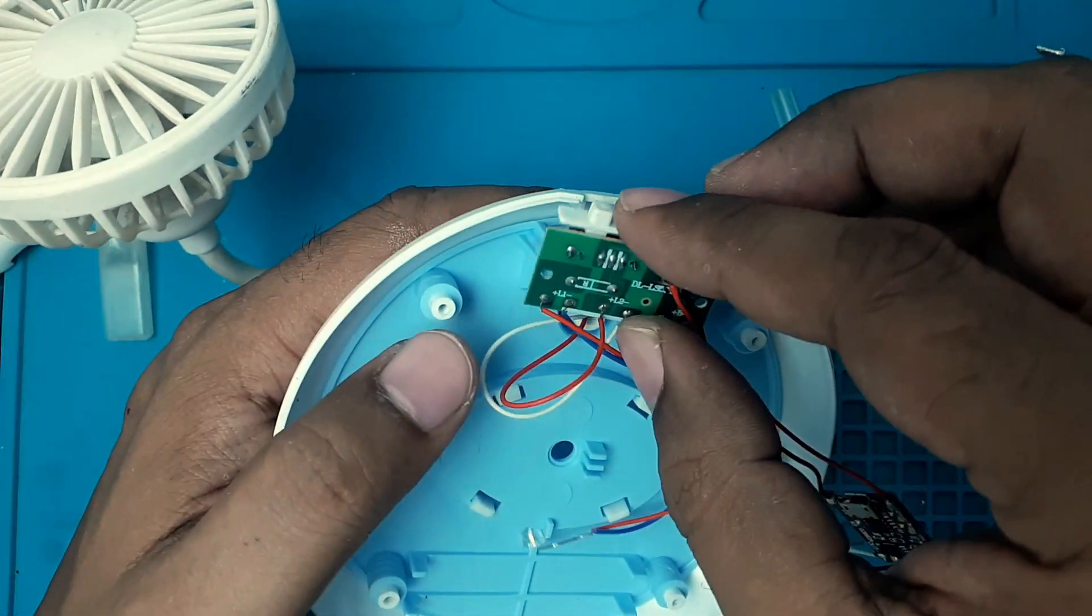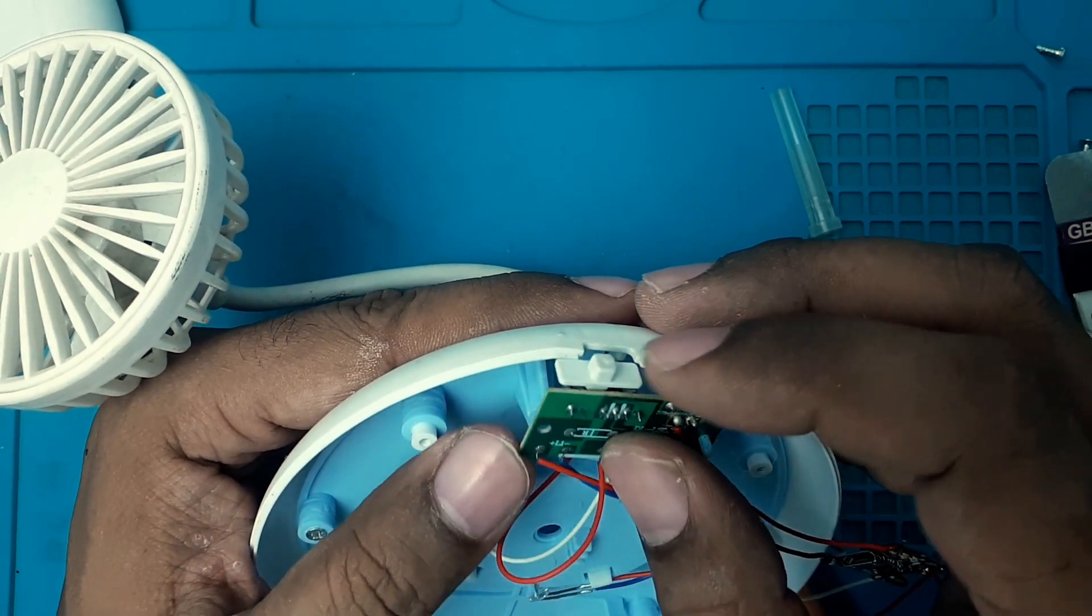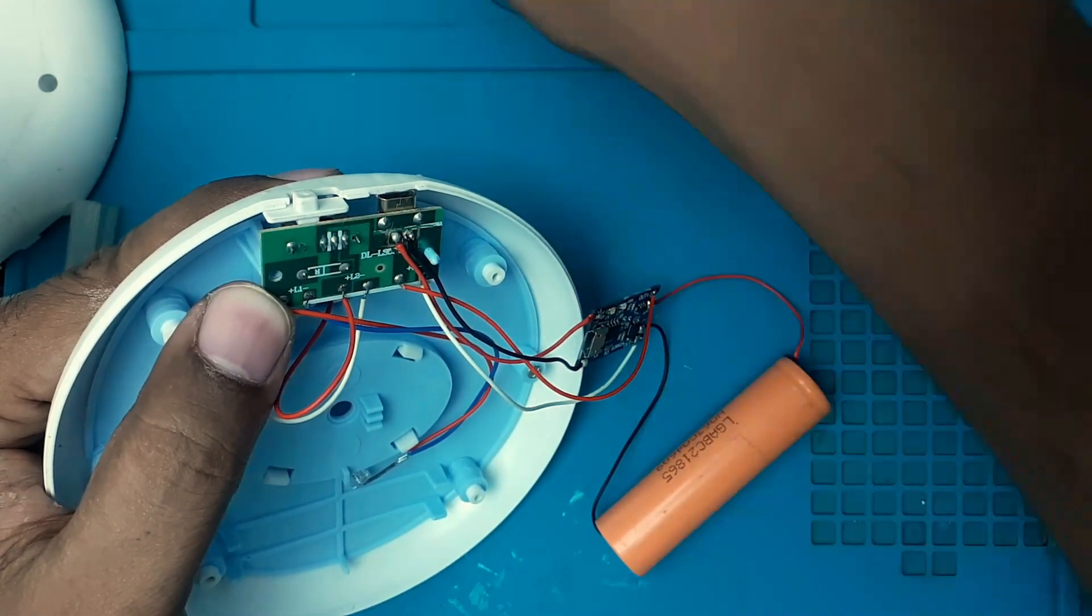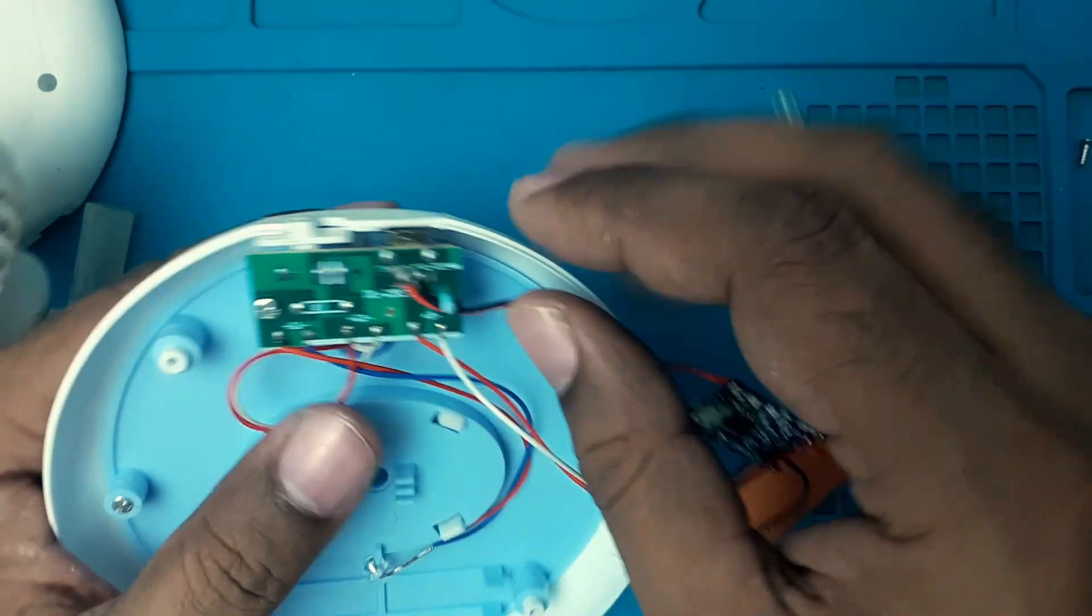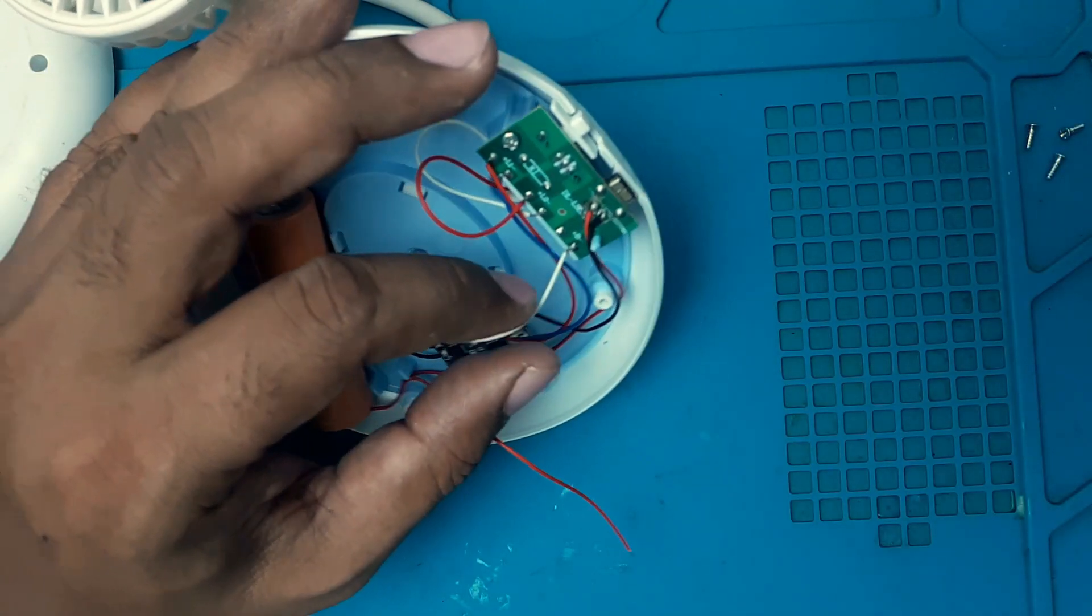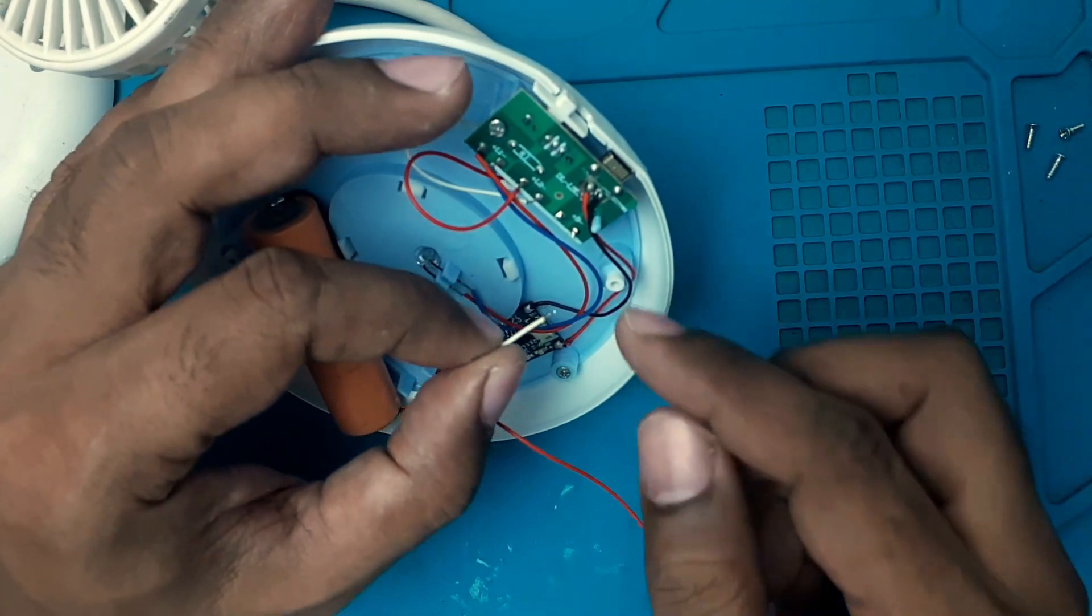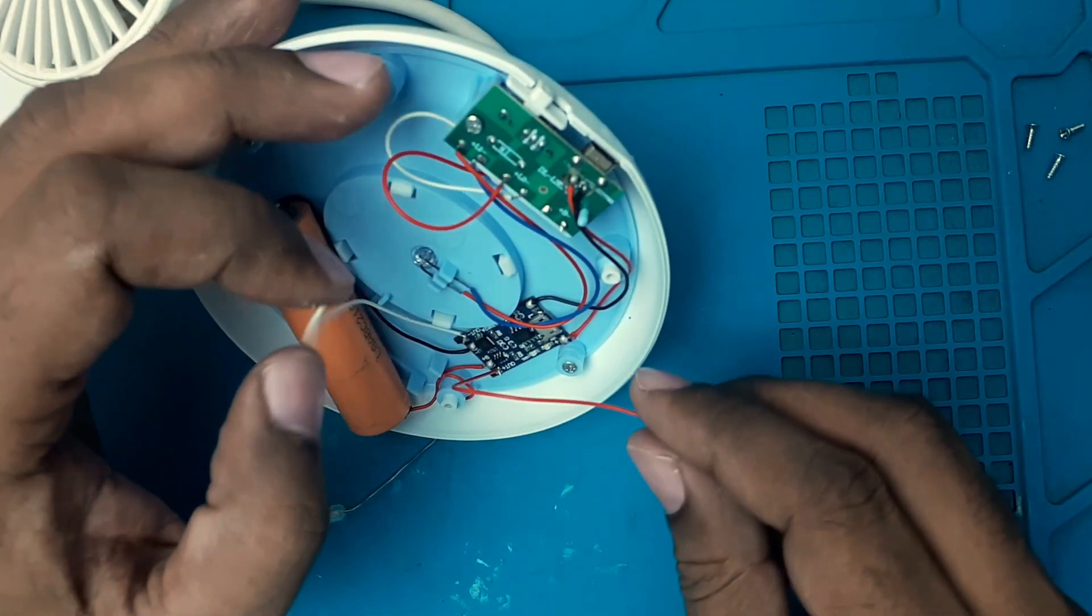And this will be a challenge. Because this battery is long and this one is short. So let's see what we can do. You see, these connections are weak. They can break any time. So I desoldered them.